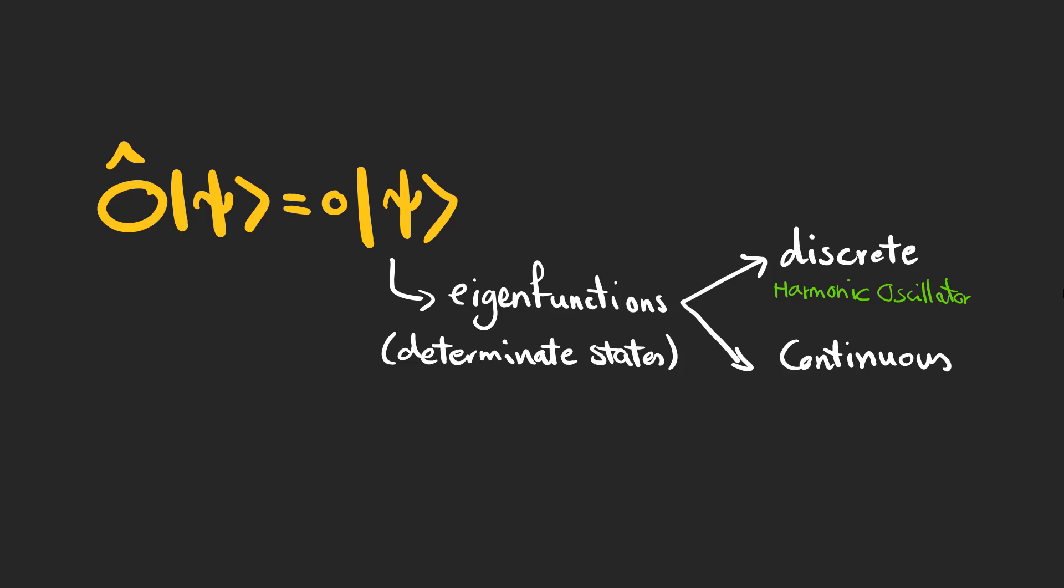On the other hand, if the spectrum is continuous, the eigenfunctions are not normalizable, and cannot represent a wave function. But linear combinations of them may be normalizable, like the Hamiltonian of the free particle.